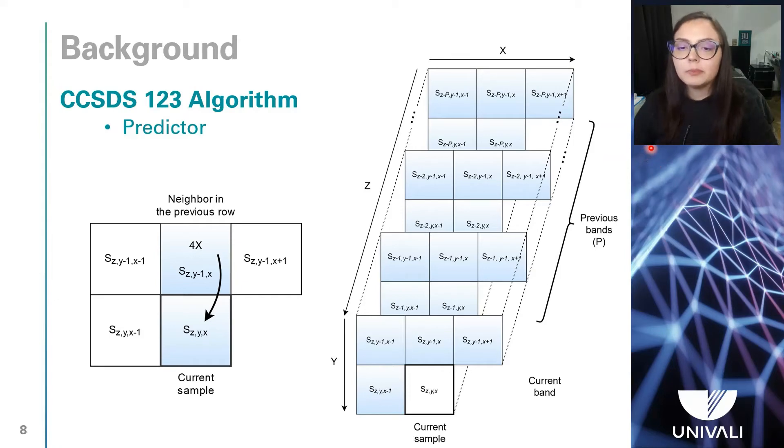Finally, the mapped prediction residual is computed, and it is the difference between each sample and its prediction, and it then compares it with the smallest difference between the predicted sample and the limits of minimum and maximum value.